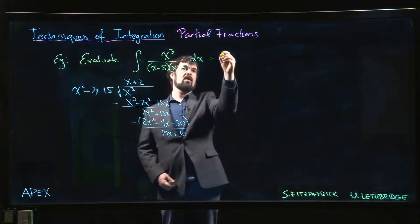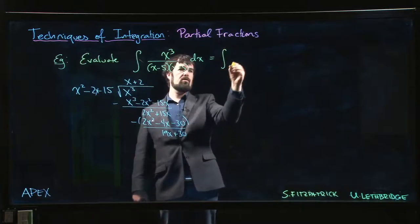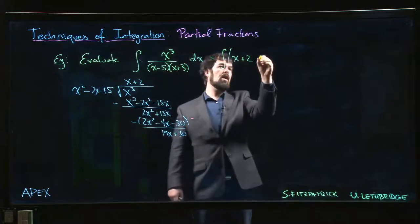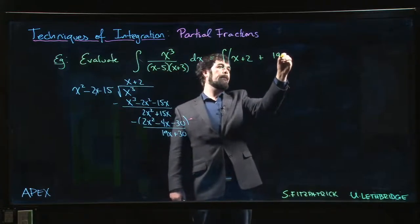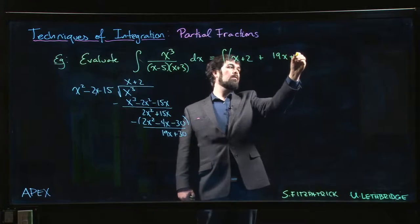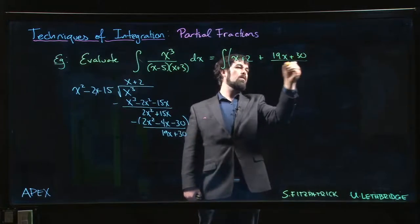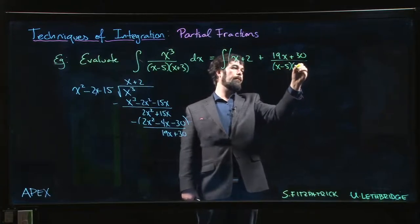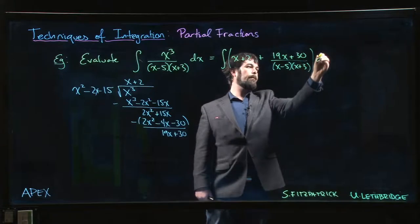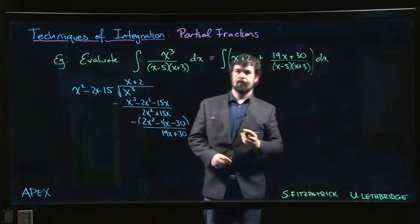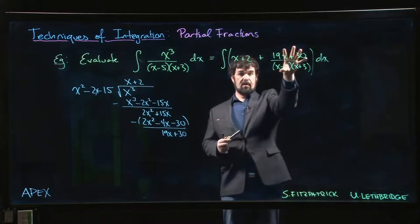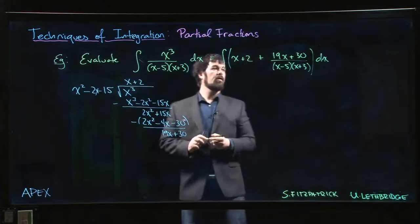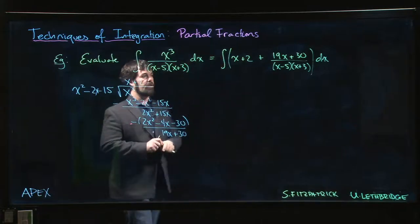We get that this is equal to x plus 2, plus 19x plus 30 over (x minus 5) times (x plus 3). This part is easy enough. Now we've got to do the partial fractions over here.